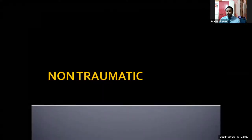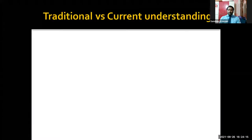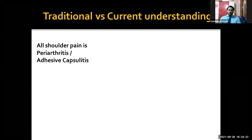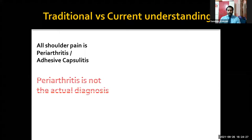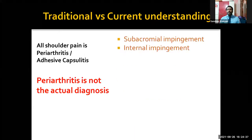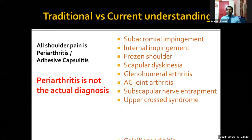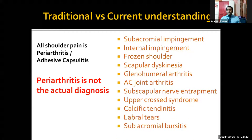We mainly have to concentrate on non-traumatic conditions, which form about 90% of a general practitioner's outpatient cases. What was the traditional concept we had and what is the current understanding? We used to think all shoulder pain is periarthritis or adhesive capsulitis, which is not the case. Periarthritis is not a clinical diagnosis per se. There is actually an array of possible diagnoses for the shoulder joint.